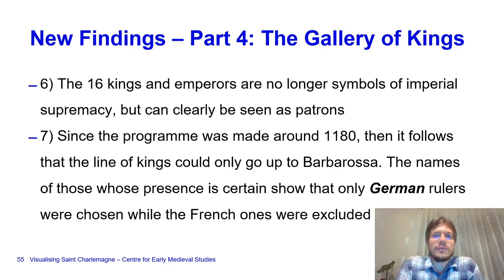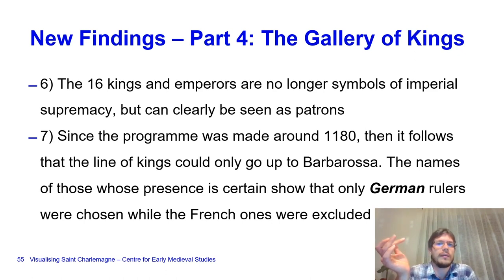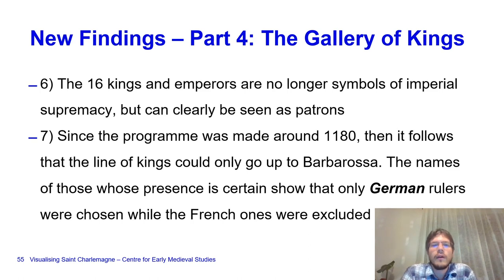Proof can be found on the other side—the side of Saint Mary—where we see Saint Mary receiving the model. Here we have the image of the founder giving the church to the patron, with the consecrator and his helper participating in the ritual. We then continue to the gallery of kings, the most controversial part of the shrine. The sixteen kings and emperors are no longer symbols of imperial supremacy but can clearly be seen as patrons—Cross has argued this much. However, since the program was made around 1180, the line of kings could only go up to Barbarossa, whereas those currently present include even Frederick II, who was only recognized in Aachen in 1215 when the shrine was finalized.